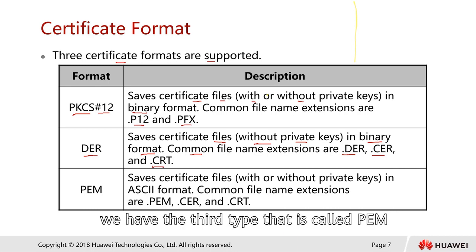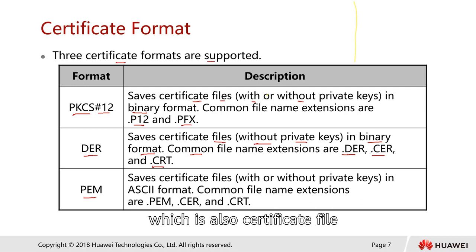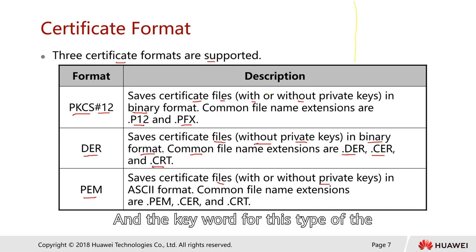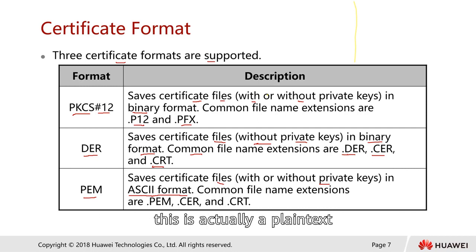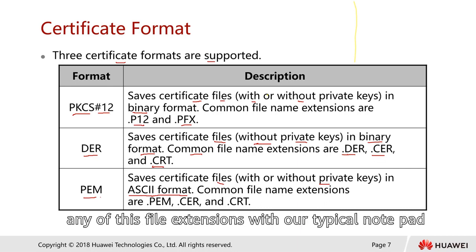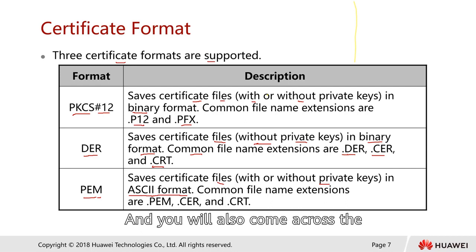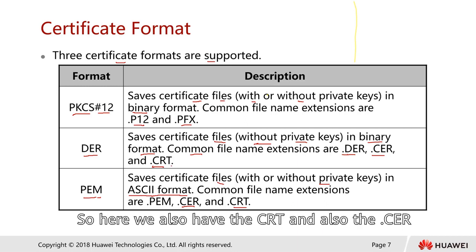Finally, the third type is called PEM — also a certificate file with or without private key. The key feature of this format is that it stores as ASCII/Base64 format, which is actually plain text. So you can open this file with a typical notepad. Note that the file extensions .crt and .cer are shared with DER, so you have to be careful with the file type.